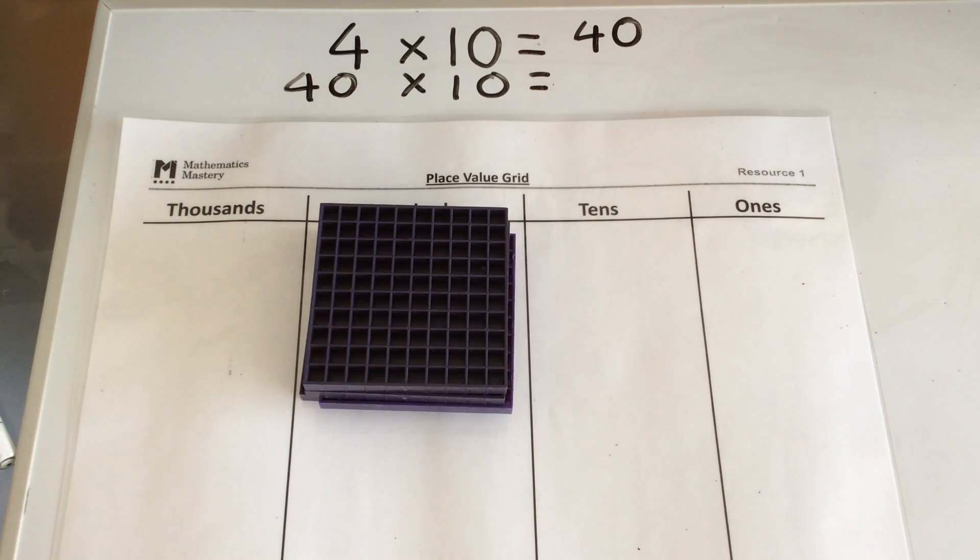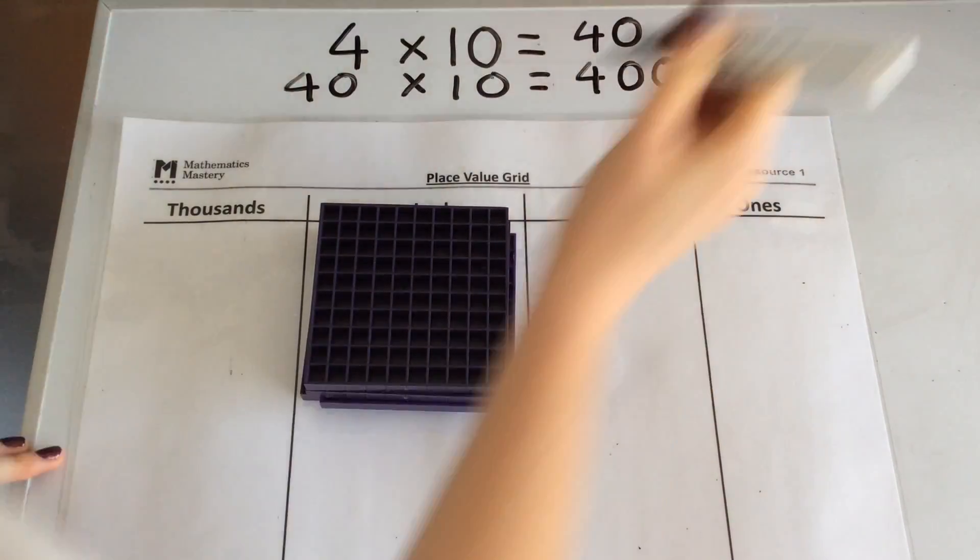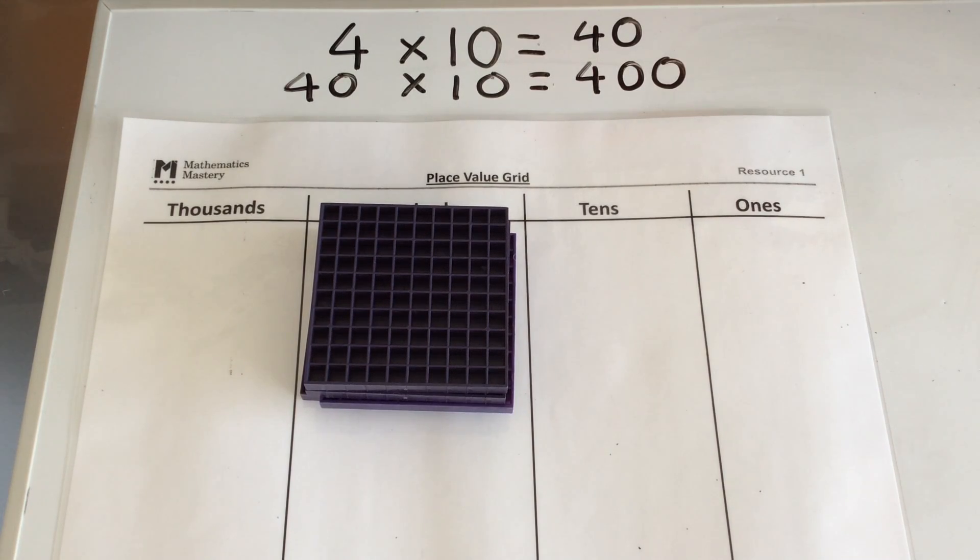So I've done that 4 times. So 10 times greater than 40 must be equal to 400. And I've proved that using my Dean's Blocks.